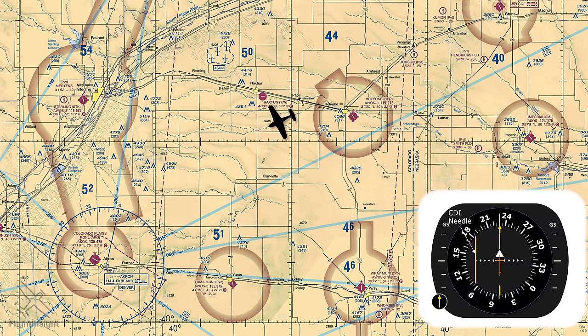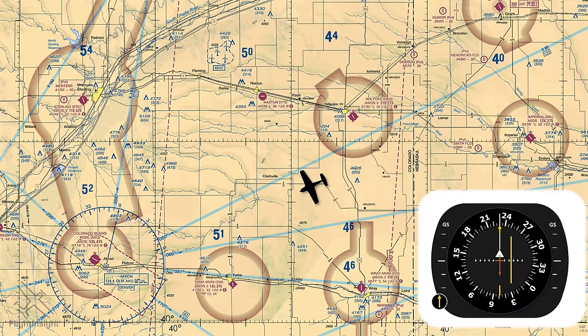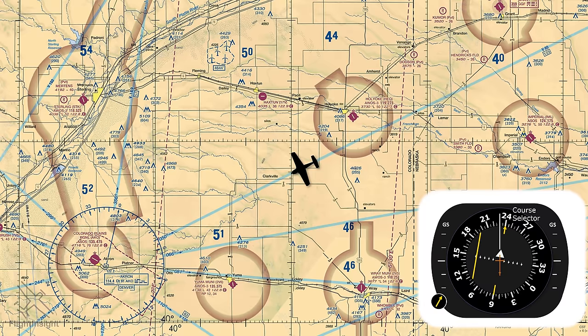This needle is the CDI. It'll deflect the opposite way as we move to the other side of the airway. Just like a VOR, we can select a desired course with the OBS function by twisting that knob at the bottom left, and the green course selector will move from 230 to 240. We've now selected a 240 course inbound to the VOR.